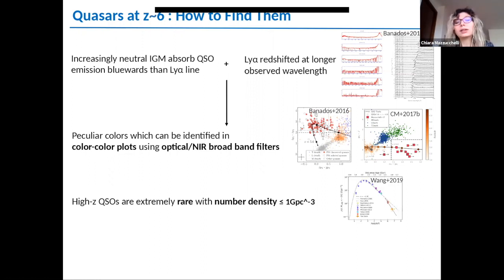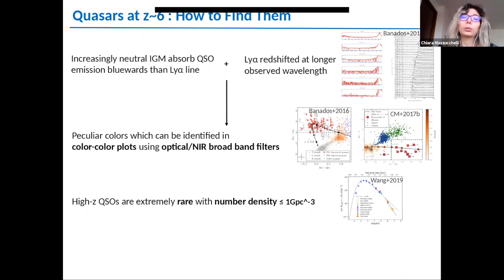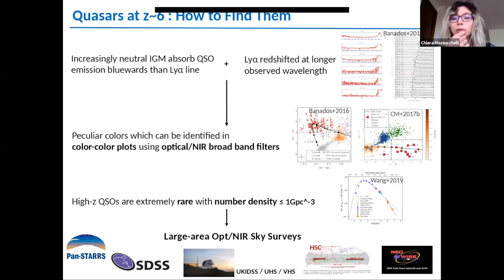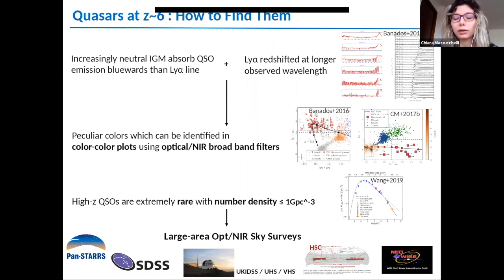High-redshift quasars are extremely rare. The number density as a function of redshift peaks around cosmic noon with a sharp decrease at redshift around six and seven, where we expect less than one object per gigaparsec cubed. We therefore need optical and infrared imaging over a large area of sky. We rely on large optical and near-infrared sky surveys such as SDSS, PanSTARRS, and HSC in the optical, UKIRT, UHS and DHS in the near-infrared, and WISE for the infrared regime.